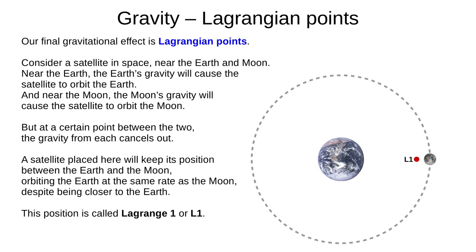The last bit of orbital mechanics before we get to planetary formation is Lagrangian points. Consider a satellite in space near the Earth and Moon. Near the Earth, Earth's gravity would cause the satellite to orbit Earth, and near the Moon, the Moon's gravity is stronger, causing it to orbit the Moon. But at a certain point between the two, the gravity from each will cancel out. A satellite placed here will keep its position between the Earth and Moon, orbiting the Earth at the same rate as the Moon despite being closer to the Earth. This position is called Lagrange 1, or L1.